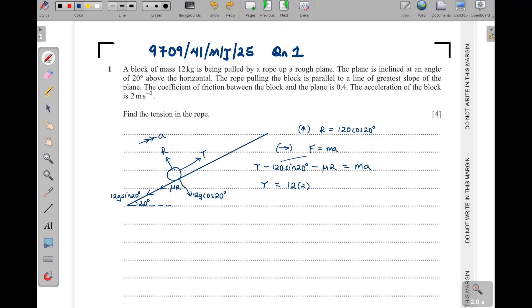Then when I take this one to this side, we can have 120, then sine of 20, then plus μ is 0.4, then times R is 120, then cos of 20.